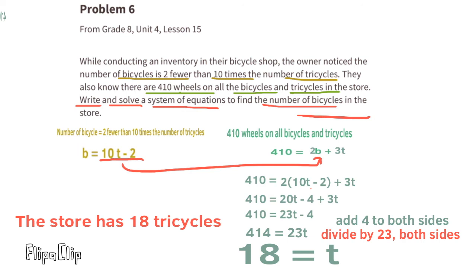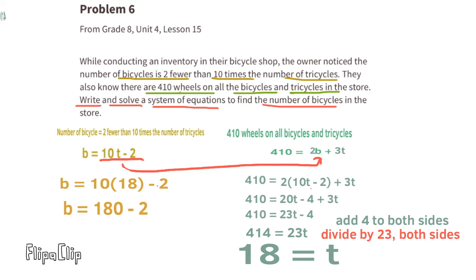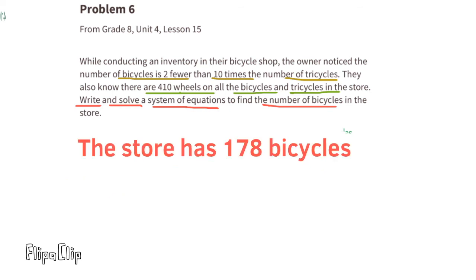Since the store has 18 tricycles, we substitute T with 18. The number of bicycles equals 10 times 18 minus 2. 10 times 18 is 180, and 180 minus 2 is 178. There are 178 bicycles in the store.